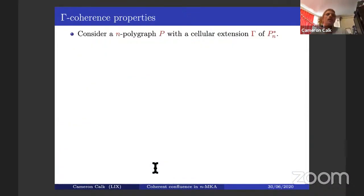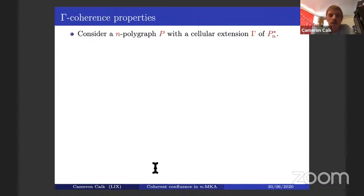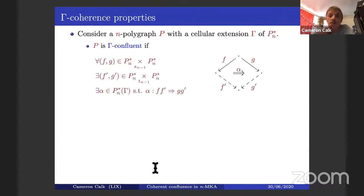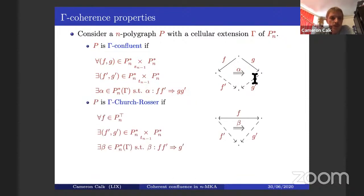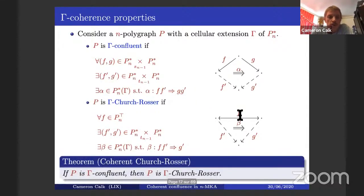What does higher-dimensional rewriting look like? We're going to use the syntax of polygraphs. The intuition is similar to the tiling we saw this morning — we want to pave confluence diagrams with higher-dimensional cells. For example, if we have a set of higher-dimensional cells gamma, we say our polygraph is gamma-confluent whenever for every iterated branching we can find some confluence and fill the diagram with a higher-dimensional cell obtained by pasting elements of gamma. Similarly, P is gamma-Church-Rosser when for every zigzag f, we can find a confluence and a higher-dimensional cell of pasted gamma-cells that fills the diagram.